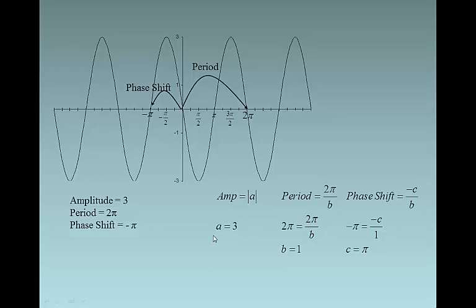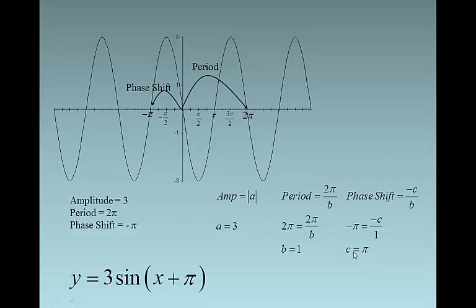Amplitude is the absolute value of A, so A is 3. Period is 2π over B — our period was 2π, so I set 2π equal to 2π over B, meaning B has to be 1. Phase shift is negative C over B; my phase shift was negative π, so negative π equals negative C over 1. Multiply both sides by negative 1 and C equals π. Put it all together: y equals 3 sine of (x + π). A positive, B is a positive 1, and this is the least positive real value for C. There's an infinite number of trig equations that would work, but this one fits the bill.